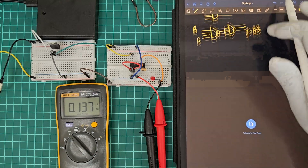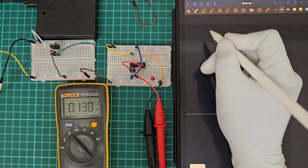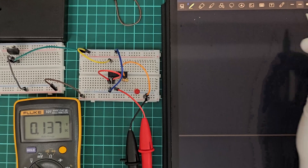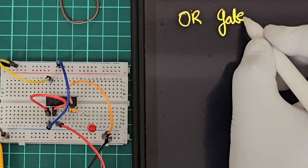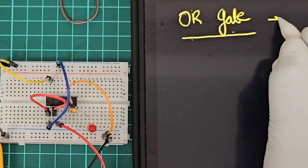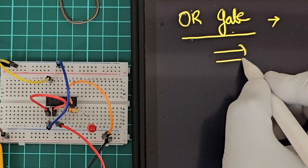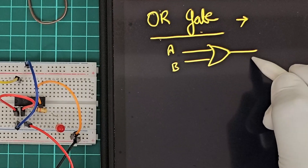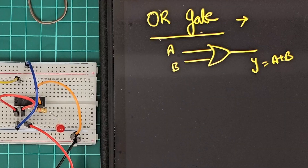So now let's make an OR gate. Our topic is OR gate. The symbol of OR gate has inputs A and B, and the output will be A plus B.